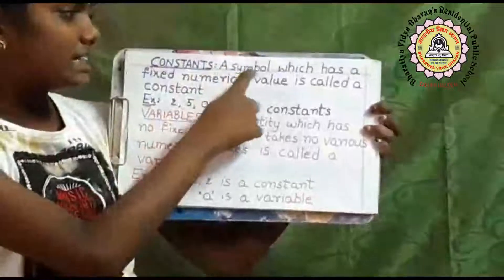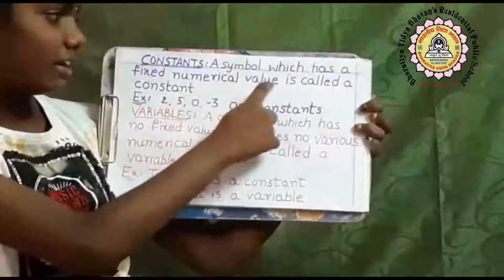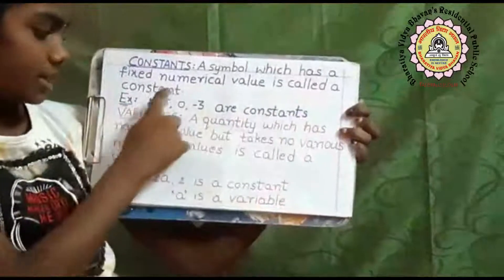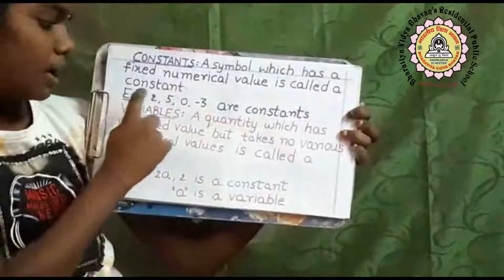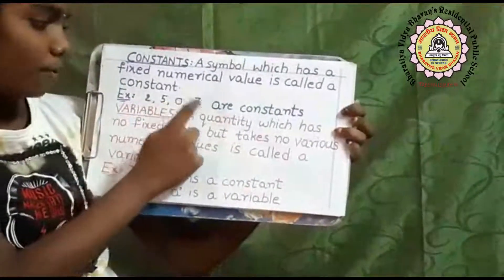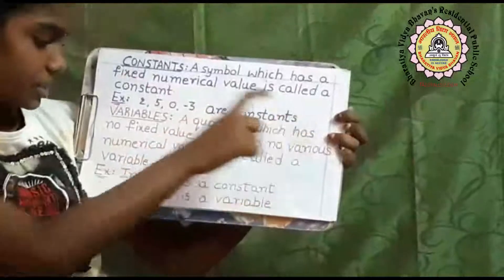Constants: a symbol which has a fixed numerical value is called a constant. Examples: 2, 5, 0, minus 3 are constants.